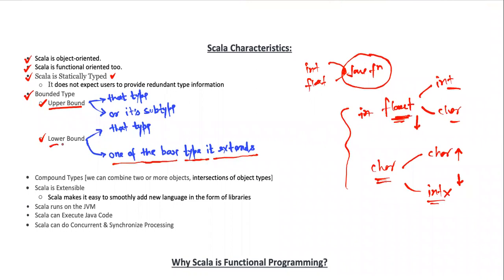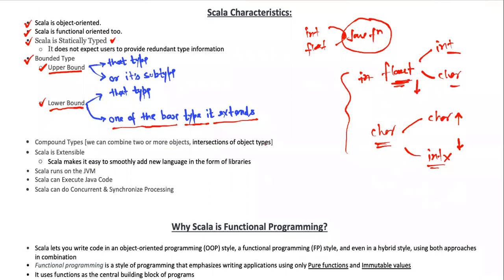This is theoretical so it might be a little difficult to grasp everything here — we will look at practical examples in assignments. In Scala you can also combine two or three objects into one — this is the intersection of objects, combining many objects to find a particular result. Scala is also extensible: you can create many more libraries written in different languages like Java, and it is smooth and easy to use with other libraries. Scala runs on the JVM and can execute Java code.